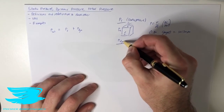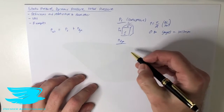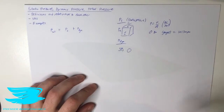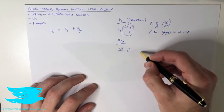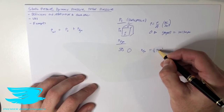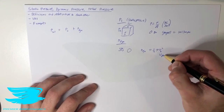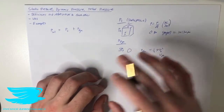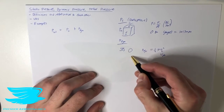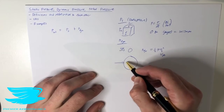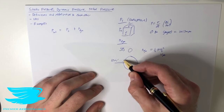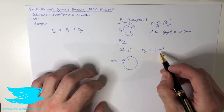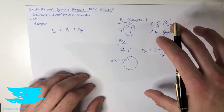Dynamic pressure is a little bit different — it's kind of like a potential pressure. Let's say we have an object and it's moving, so there's a free stream velocity of u-infinity. We have the static pressure on the surface, but we also have something called the dynamic pressure, which equals half times the density times the velocity squared — in this case u-infinity. As long as there is no relative motion between the object and the free stream velocity, the dynamic pressure won't be felt.